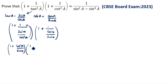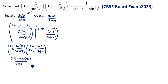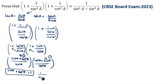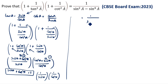1 plus cos square A by sin square A, close the bracket. Open the bracket: 1 plus this sin square A goes up, giving 1 plus sin square A by cos square A. After that, cross multiply. Sin square A plus cos square A divided by sin square A, close the bracket. The same way: cos square A plus sin square A divided by cos square A. Since sin square A plus cos square A equals 1, this is 1 and this is also 1. What comes is 1 by sin square A into 1 by cos square A. We will write it as 1 by (sin square A into cos square A). So cos square A is equal to 1 minus sin square A.